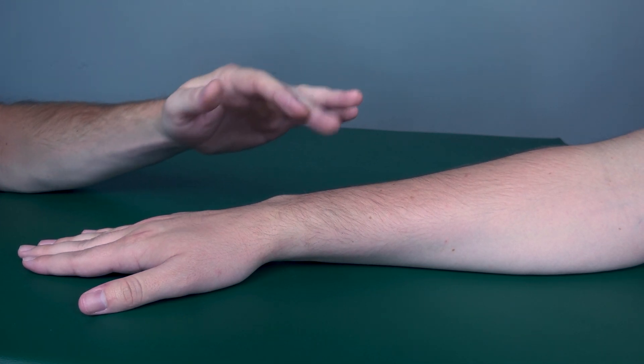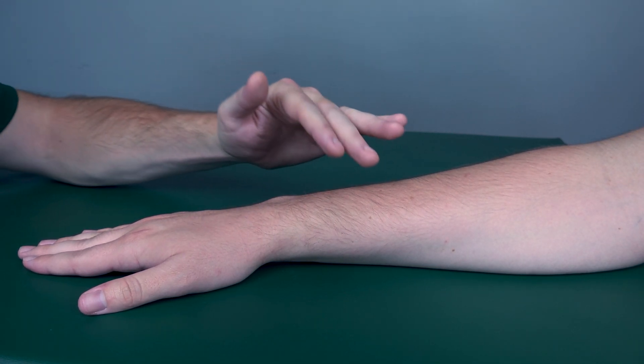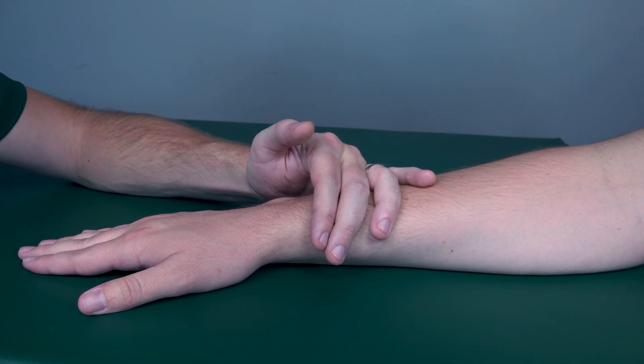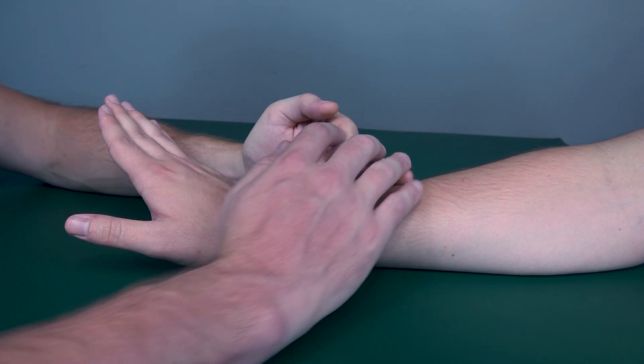You want to stabilize the forearm and then have your patient bring their hand into each one of those positions, and then you add resistance. So go ahead, let's do the ulnaris first. I'm going to apply resistance radially and into flexion.